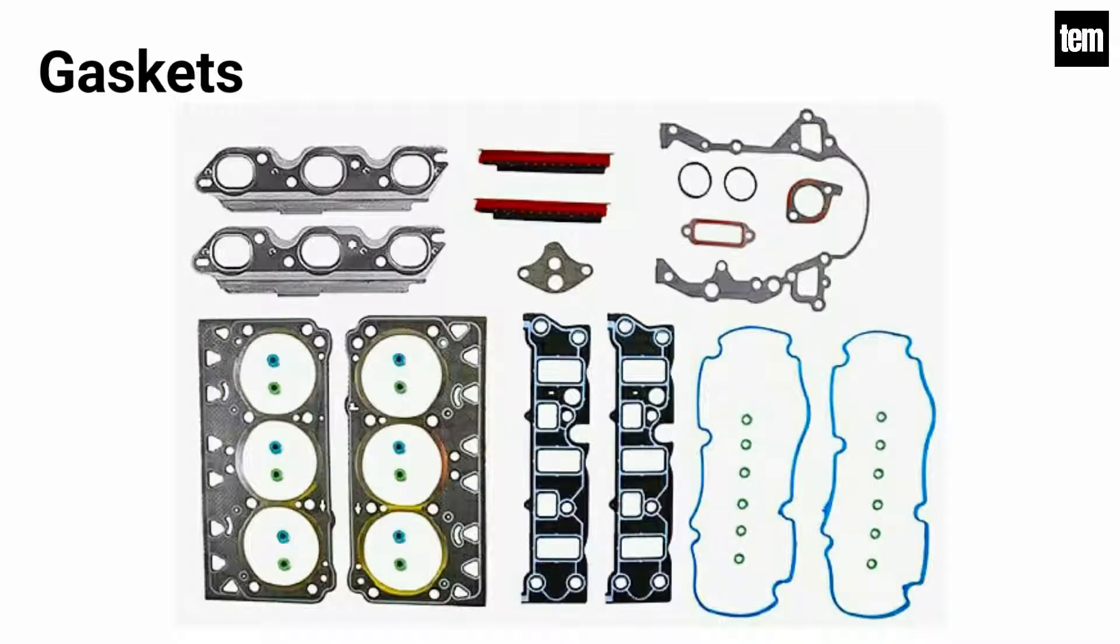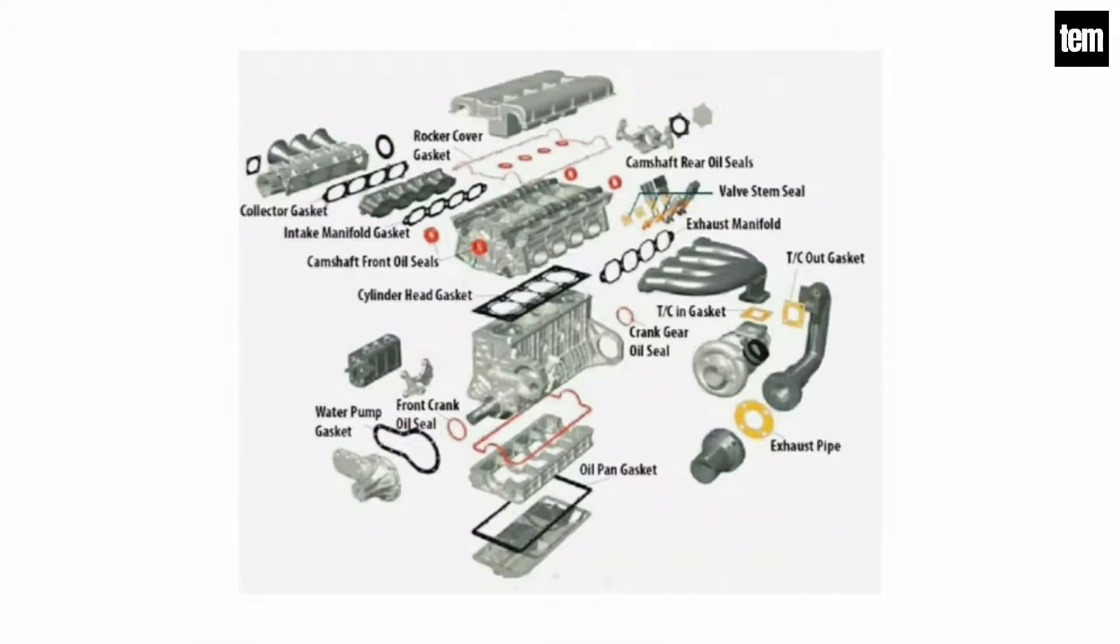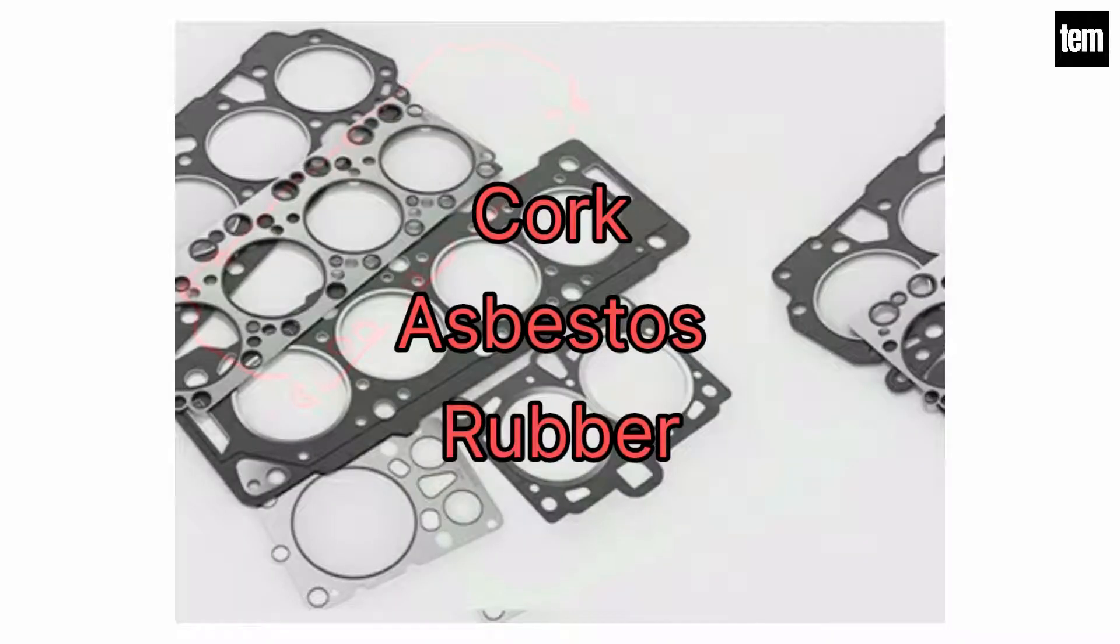Gaskets are used to provide a tight-fitting joint between two surfaces. Gaskets are found in the joint between the cylinder head and the cylinder block, between the crankcase and oil pan, and between the cylinder block and manifold. Materials used for gaskets are cork, asbestos, and rubber.